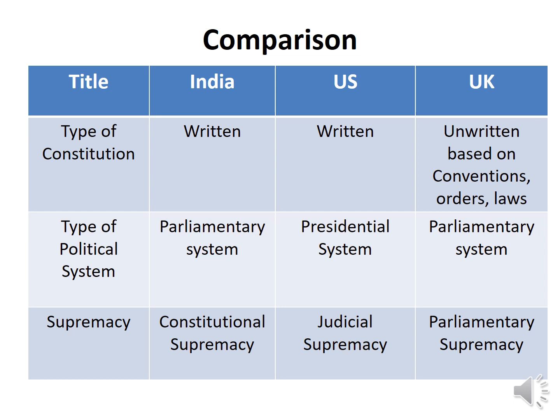In the US, judicial supremacy is the most powerful principle — India has adopted the concept of judicial review from the US Constitution. The US judiciary can declare any law or constitutional amendment to be invalid or illegal if it violates a fundamental right or any provision of the Constitution which the judiciary considers fundamental for governance or for the rights of citizens.